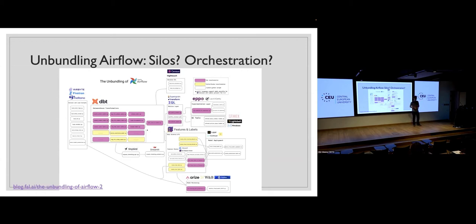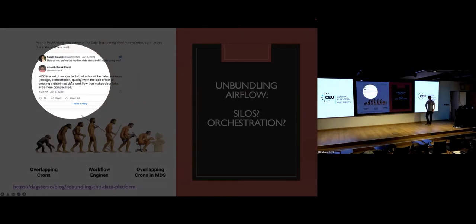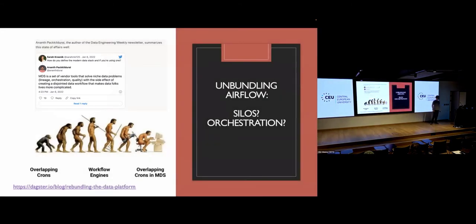Without a single pane of glass, people joke that the modern data stack is basically back to siloed data processing. It's described as a set of vendor tools that solve niche data problems — with regard to lineage, orchestration, and quality — with the side effect of creating a disjoint data workflow that makes data folks' lives much more complicated than before. Overlapping cron jobs are not what we wanted from modernizing the data stack.